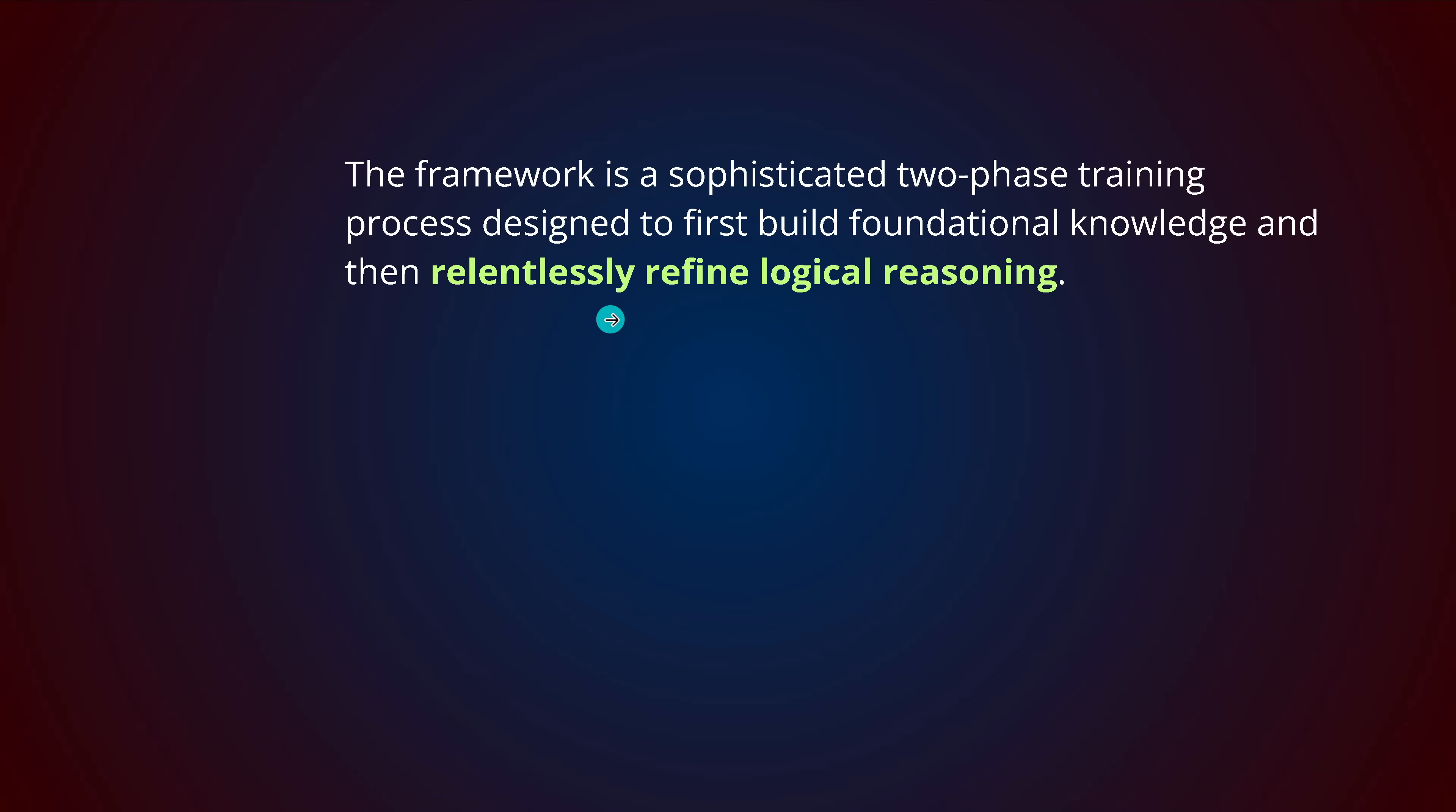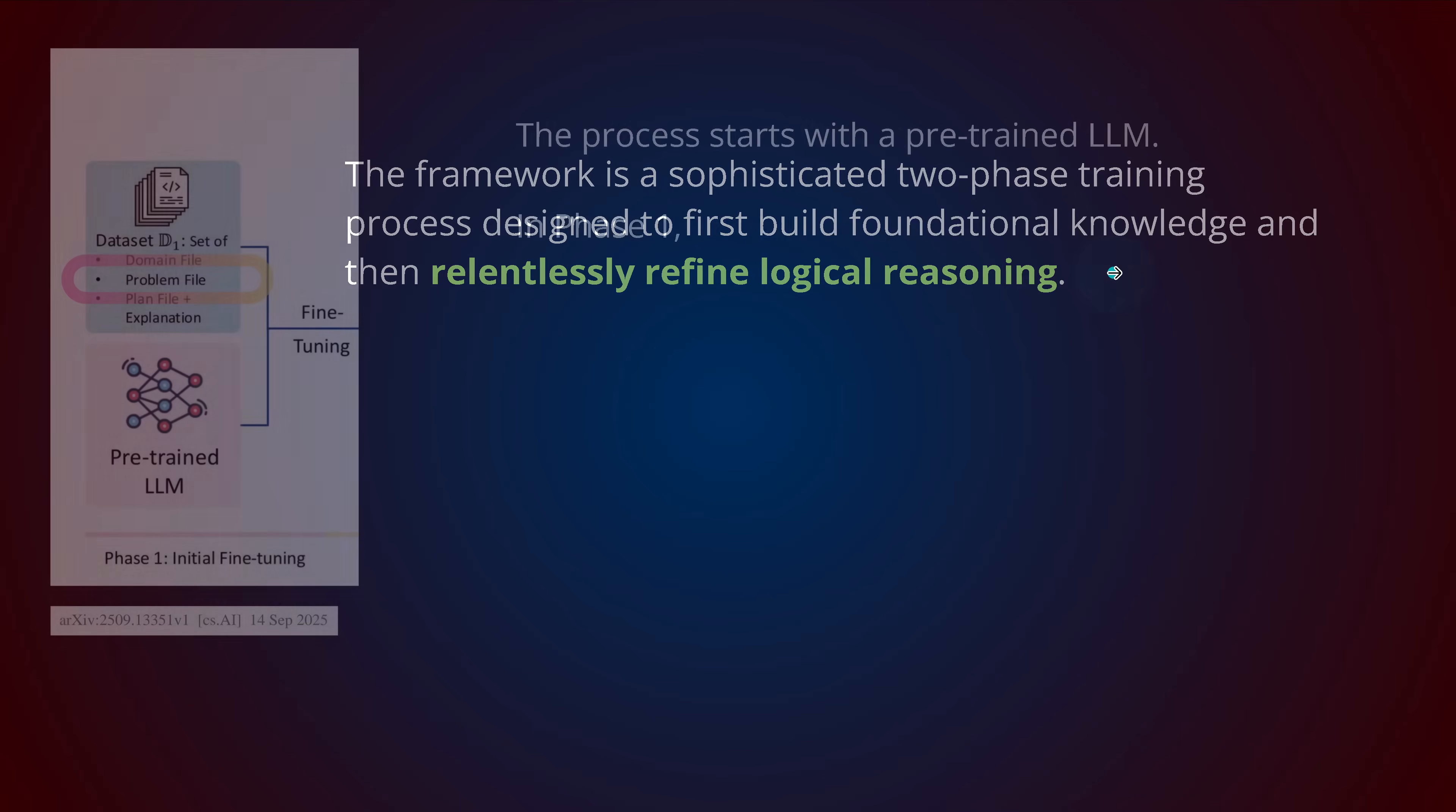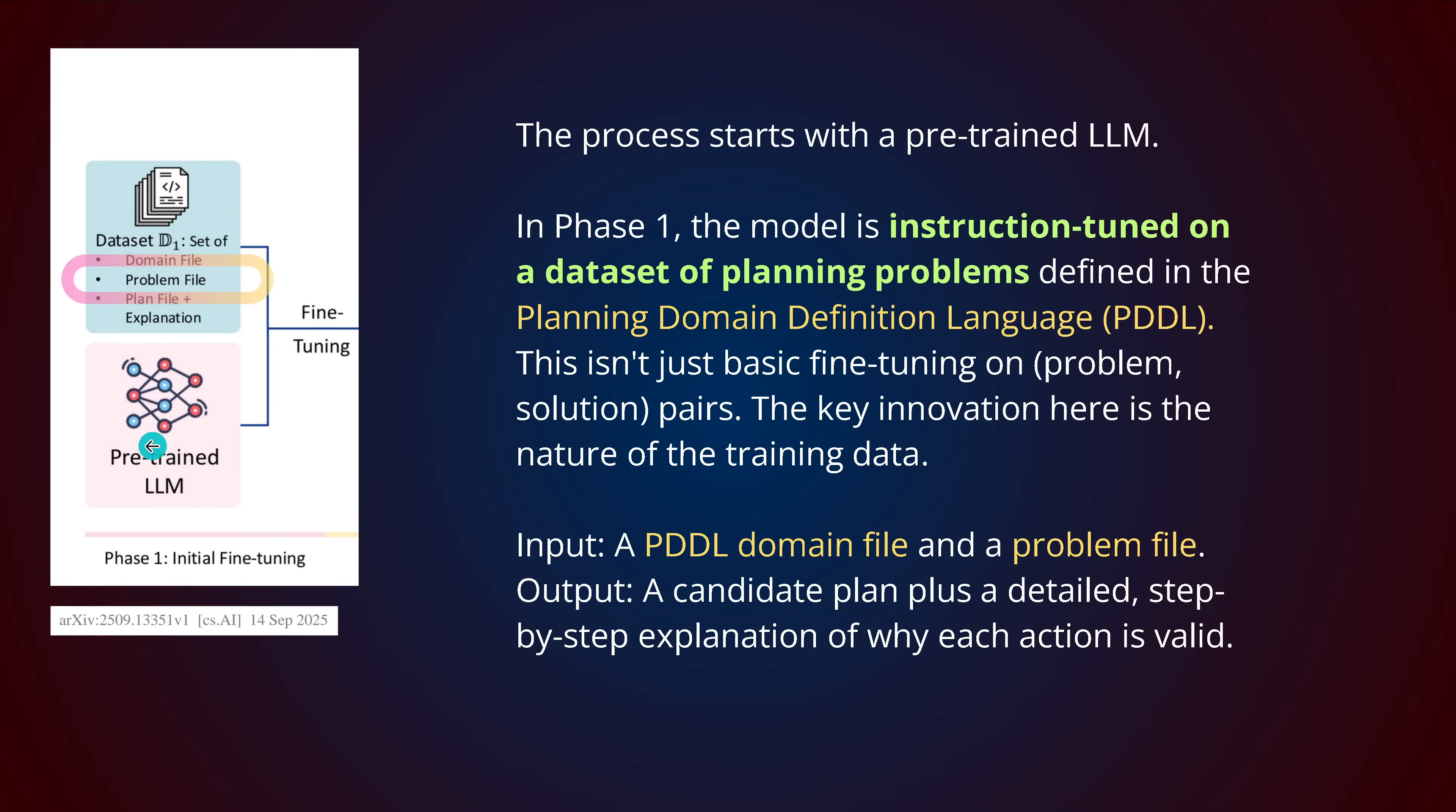We don't want just next token prediction. We want to go for pure logic precision. We take a pre-trained LLM. We're in phase one. The LLM is instruction tuned on the dataset of planning problems. We have the planning domain definition language - the problem file, the domain file, the plan file, maybe even an explanation. Then you have instruction tuning on this pre-trained LLM.